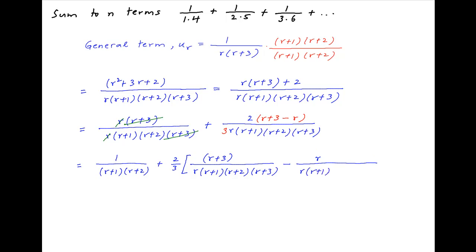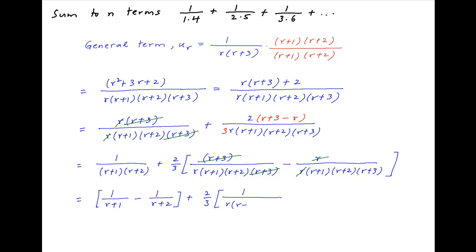r + 3 cancels in the middle term and r cancels in the last term. The first term can be written as 1 upon (r + 1) minus 1 upon (r + 2). Therefore, u_r is equal to 1/(r + 1) minus 1/(r + 2) plus 2/3 times, in brackets, 1 upon r(r + 1)(r + 2) minus 1 upon (r + 1)(r + 2)(r + 3).